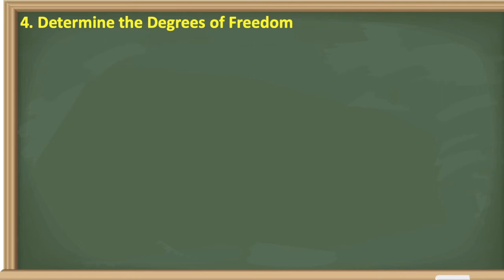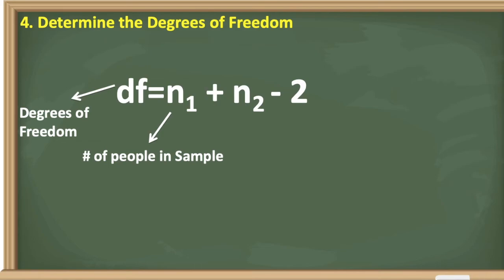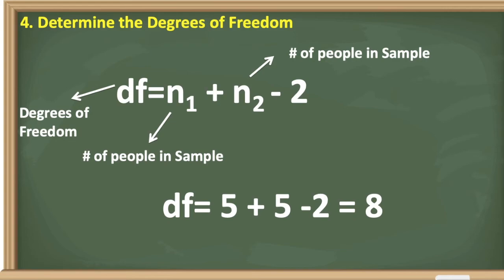Step four is to determine the degrees of freedom. The formula is df equals n₁ plus n₂ minus 2, where n₁ is the number of people in group 1 and n₂ is the number in group 2. We have 5 females and 5 males, so df equals 5 plus 5 minus 2, which equals 8. Our degrees of freedom is 8.